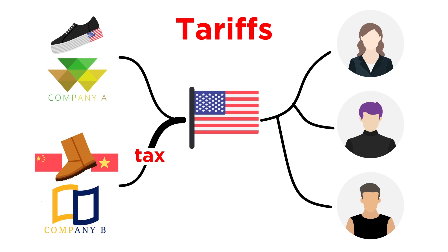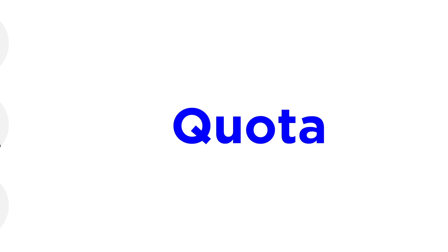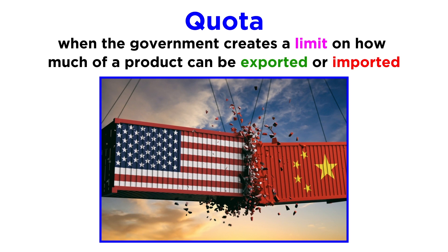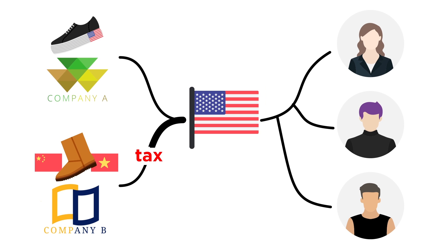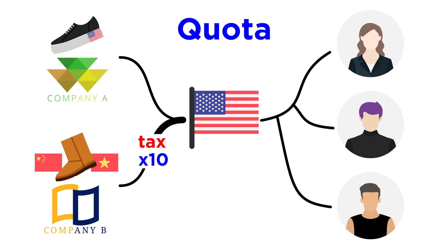Another way a government might limit trade is by creating a quota. A quota is when the government creates a limit on how much of a product can be exported or imported. For example, the United States could place a quota on the number of shoes imported from Company B in order to encourage more consumers to buy shoes from Company A.